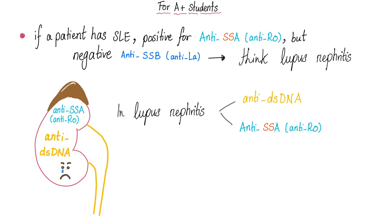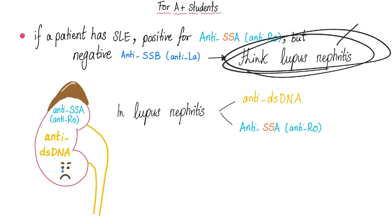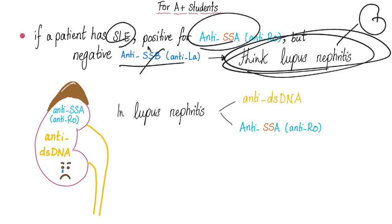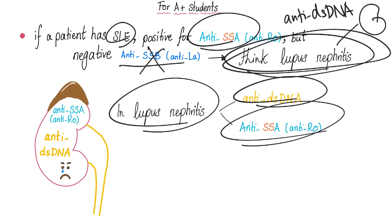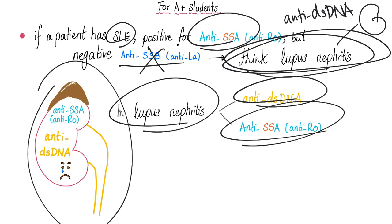For excellent students only: if a patient has lupus and is positive for anti-SSA but negative for anti-SSB, think lupus nephritis. When you have a patient with lupus nephritis, they will probably have lupus symptoms, positive anti-SSA, negative anti-SSB, and positive anti-double-stranded DNA. So in lupus nephritis you have anti-double-stranded DNA and/or anti-SSA. The kidney cries with either anti-double-stranded DNA or anti-SSA anti-Rho.